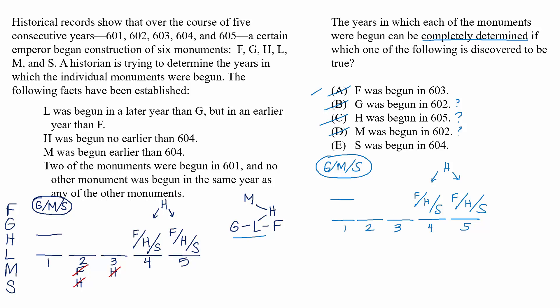That leaves choice E, which says that S was begun in 604. Well, if S is in 604, then H has to be in 605. That would leave the GLF chain to be 1, 2, and 3. And then only M is left to be with G in 1. So, E allows us to place each of the elements.